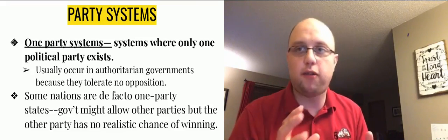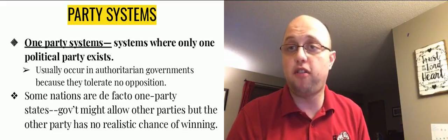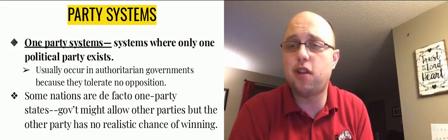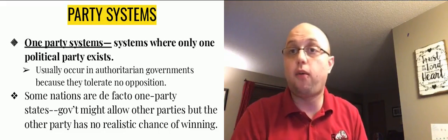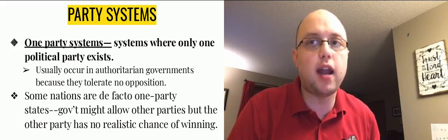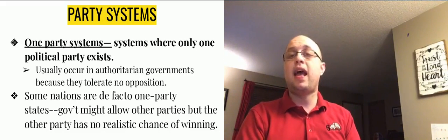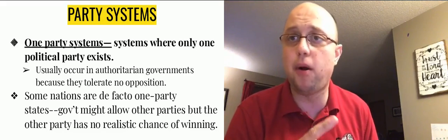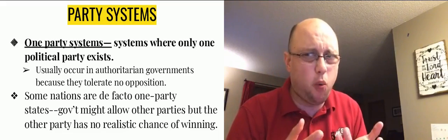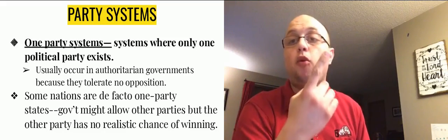If you look at the world, there are different types of systems in which political parties operate. One is pretty simple: a one-party system, meaning only one party exists. This usually happens in authoritarian regimes because they tolerate no opposition. For example, there's one party in North Korea, one in China, one in Cuba. Countries with a dictatorship or authoritarian government usually have one party in control and only one party on the ballot. Some nations are de facto one-party, meaning they have more than one party, but really no more than one is going to win the election.